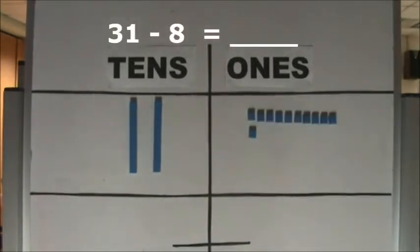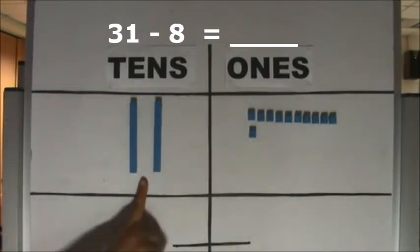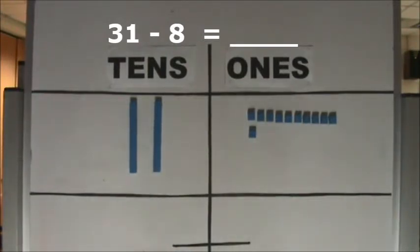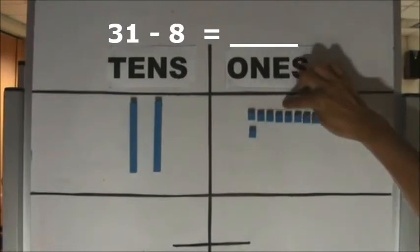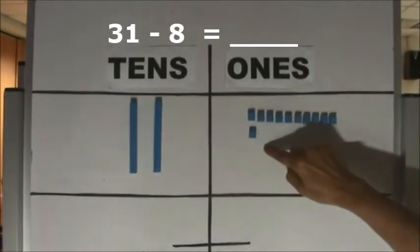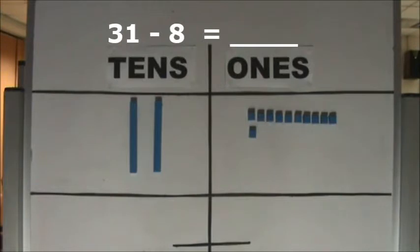How many tens do we have left? We have 2 tens left. How many ones do we have now? 10 and 1 make 11. We have 11 ones now.